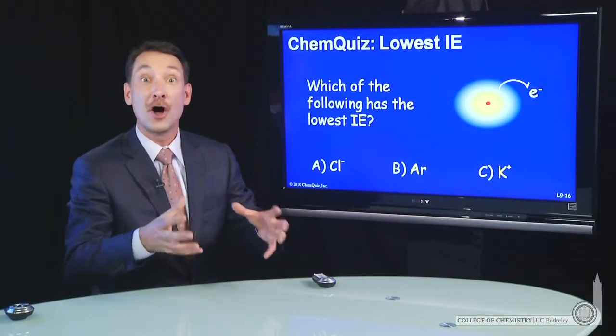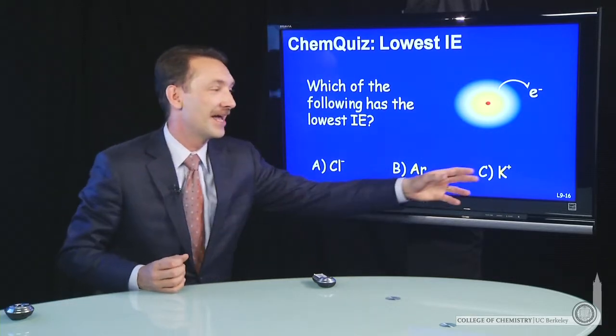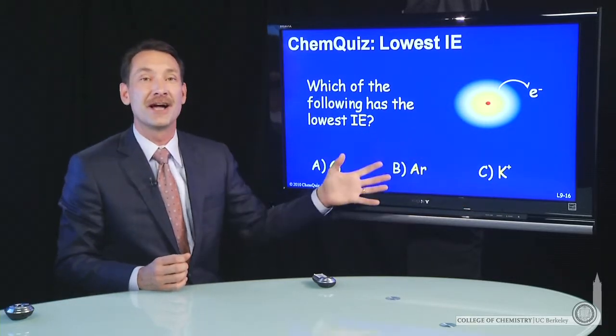Let's look at ionization energies when we're not all atoms. That is, I have chlorine minus, argon, and potassium plus here, a mixture of atoms and ions.